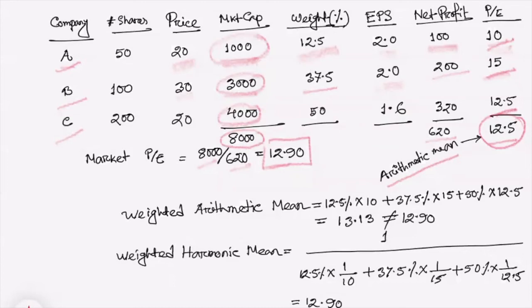So if you take the weighted average number, then still the weighted average arithmetic mean will be 13.13, which is not equal to 12.9. So certainly, this is the wrong answer.